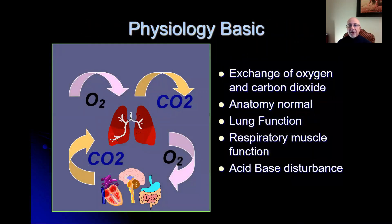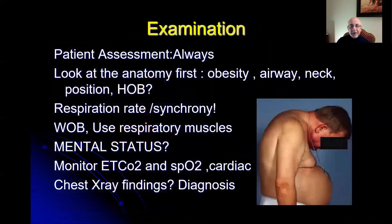Let's review some basic physiology first. The respiratory system ensures adequate exchange of oxygen and carbon dioxide. Normal dead space is generally about 150 cc's, and we depend on normal lung function or alveolar ventilation, which depends on normal respiratory muscle function, primarily the diaphragm and accessory muscles. Acid-base disturbances are common in the critically ill patient and require review of the chemistry panel prior to intubating, especially serum potassium. I recommend examining the patient carefully prior to and following intubation — patient assessment is always of great importance.